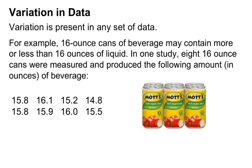It's important to know that there is variation among data. Even if a machine is putting 16 ounces of juice into a can, it's possible it won't get exactly 16 — it might get a little less or a little more. What we want to do in this class is see if that variation is acceptable: close enough to 16 ounces to say the machine is functioning properly, or varying too much to say it's not.